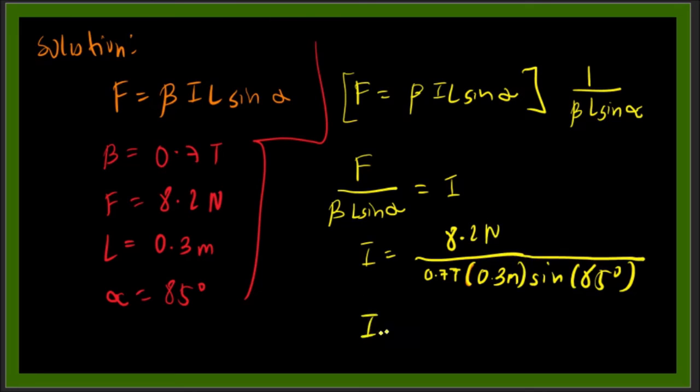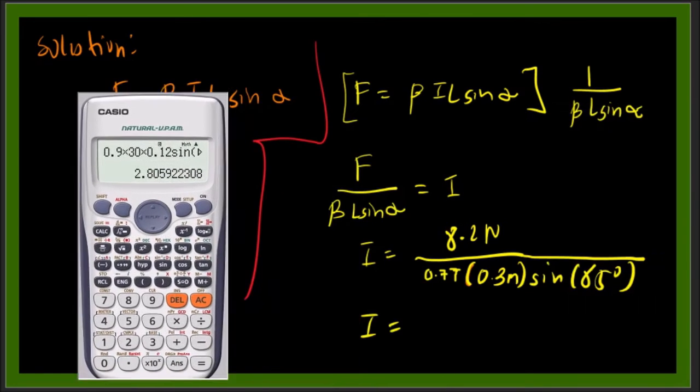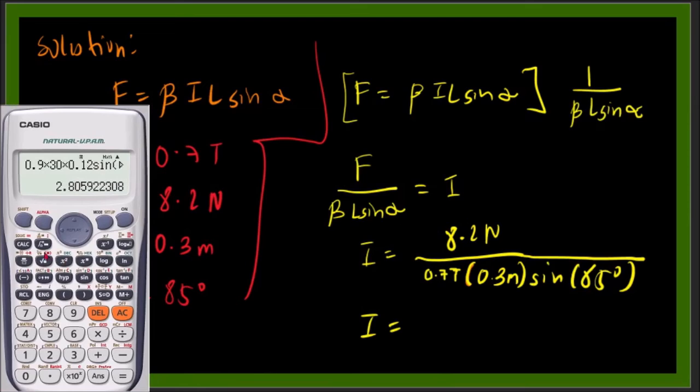Let's use our calculator. So we have 8.2 newtons over 0.7 tesla times 0.3 meters times sine 85 degrees. Of course, your calculator setting must be in degrees because our angle is in degrees. So we have 39.2 amperes.